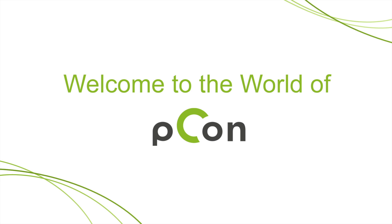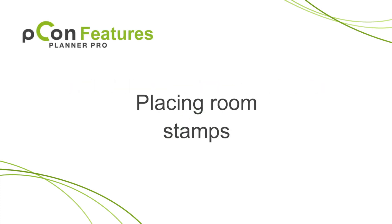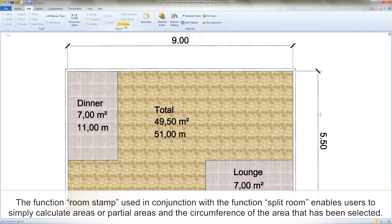Welcome to the world of PECON. We will use this video to familiarize you with the room stamp function. The room stamp function, used in conjunction with the split room function, enables users to simply calculate areas or partial areas and the circumference of the area that has been selected.